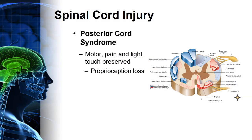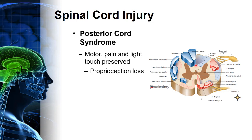Posterior cord syndrome — also called dorsal cord syndrome — is essentially opposite of anterior. With an injury to this region, the patient may not have touched any of the descending pathways, just the ascending ones like the cuneate and gracilis fasciculi. These structures are responsible for proprioception, which is a sensation, so it's an ascending pathway. Motor function and pain and light touch are preserved — the motor especially, because most motor tracks are located in the anterior portion. However, if the posterior injury is deep enough, there could be some involvement of the lateral corticospinal tract.